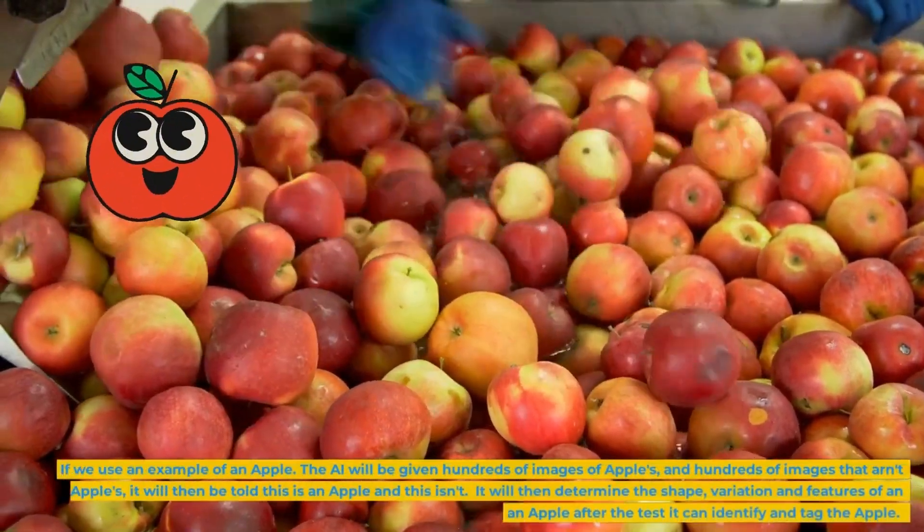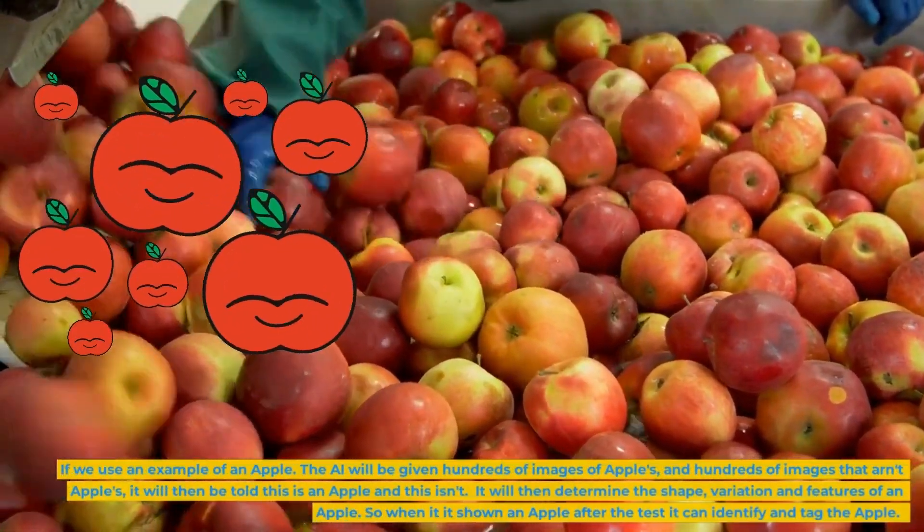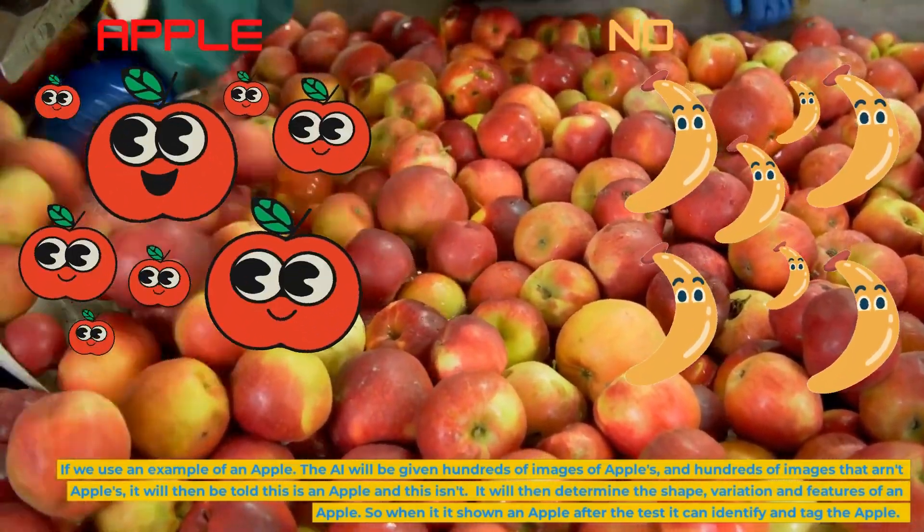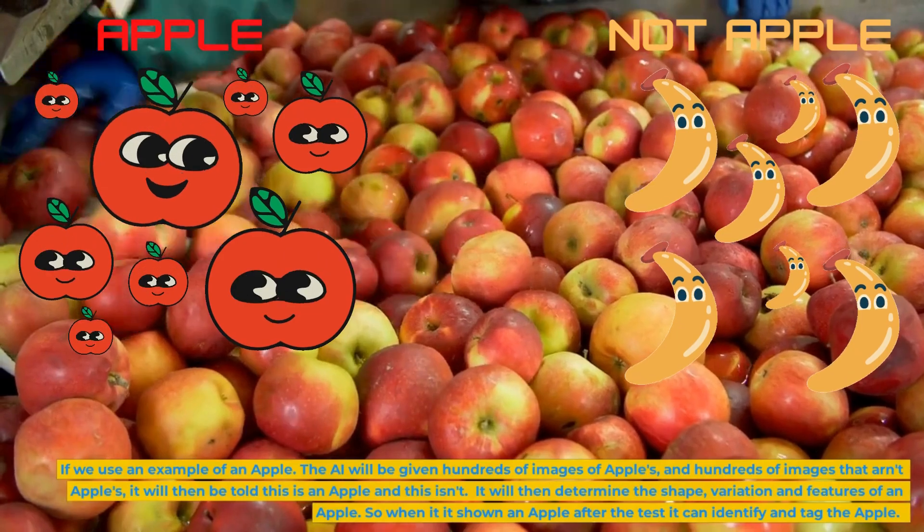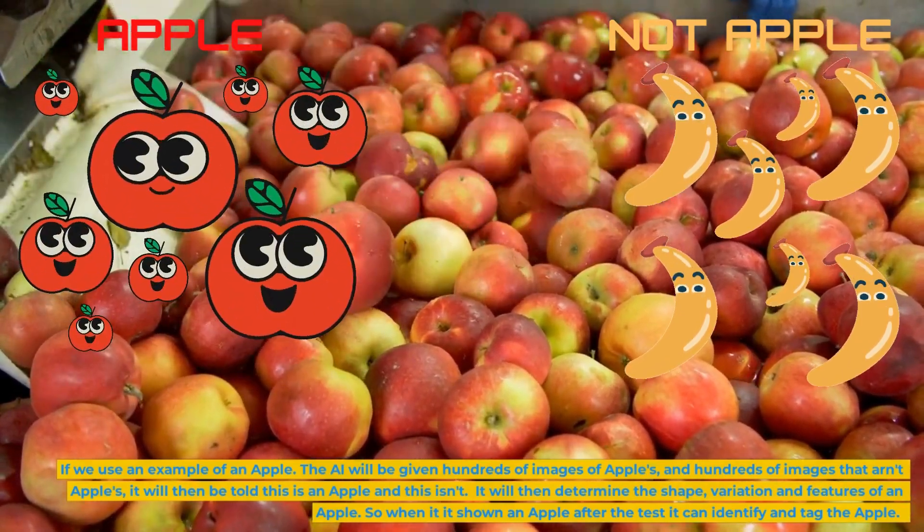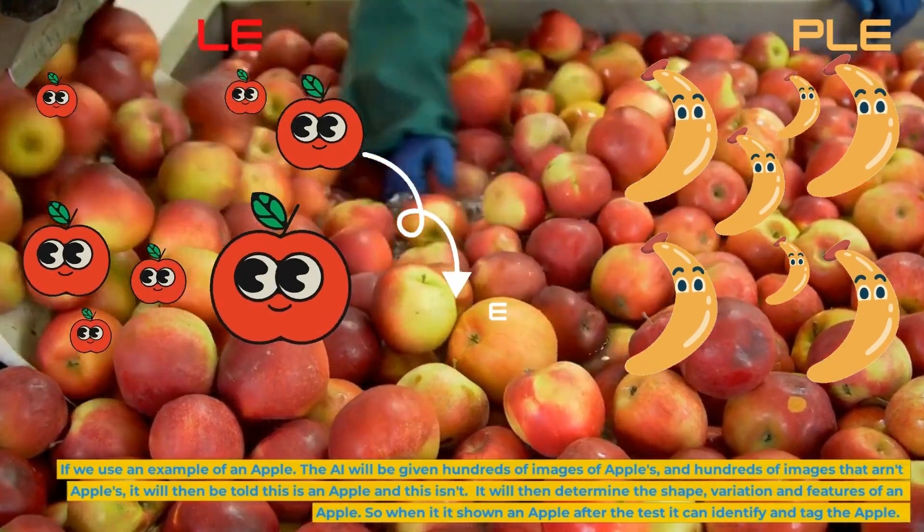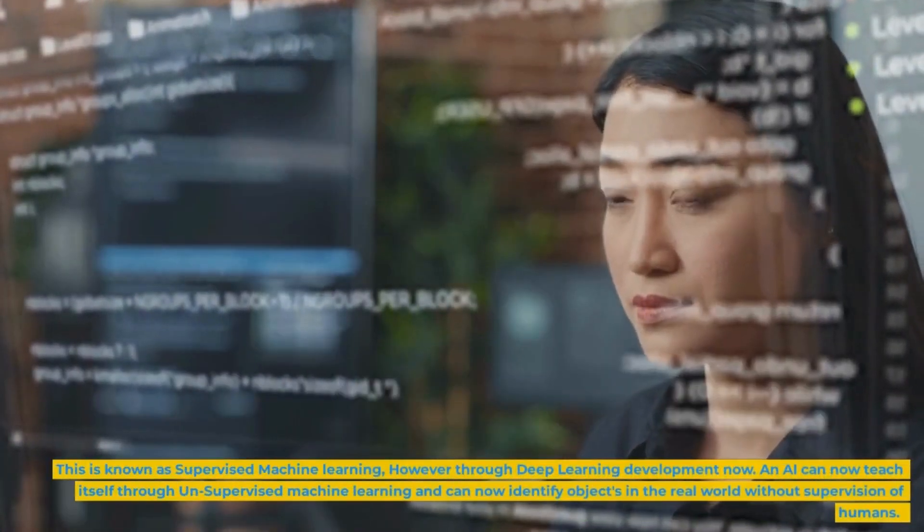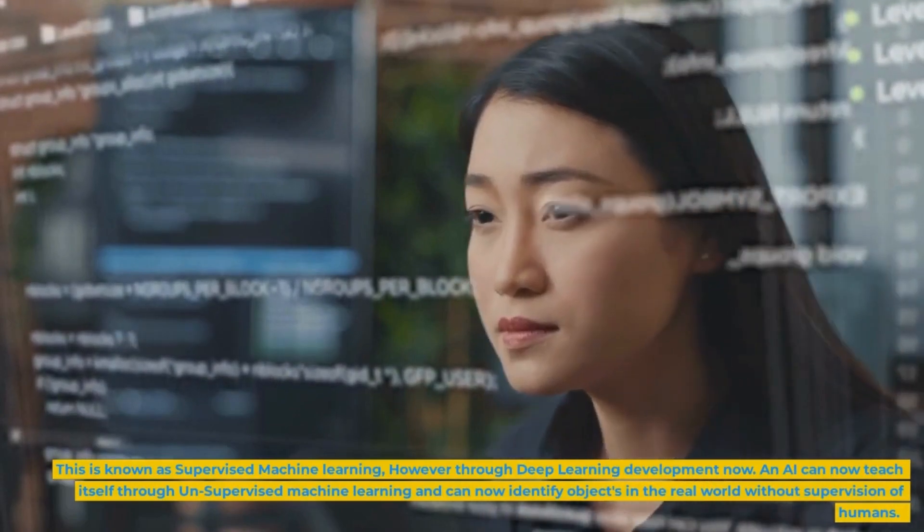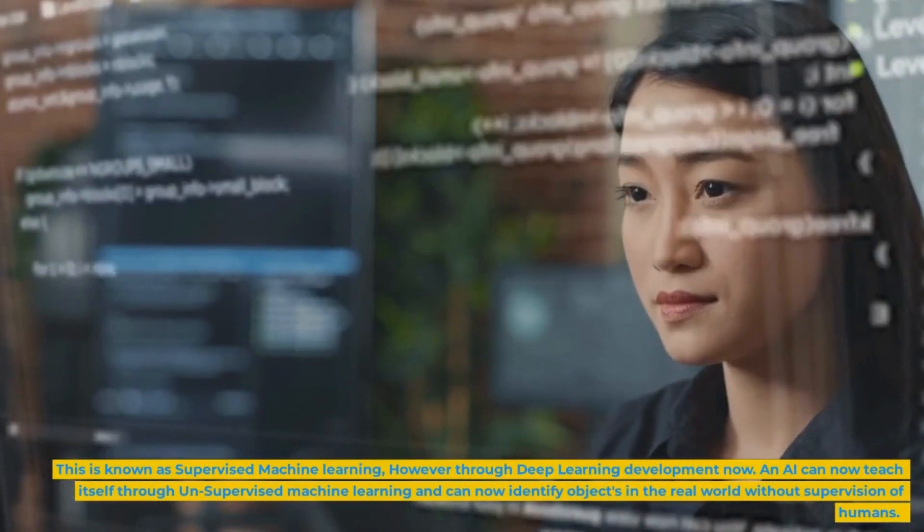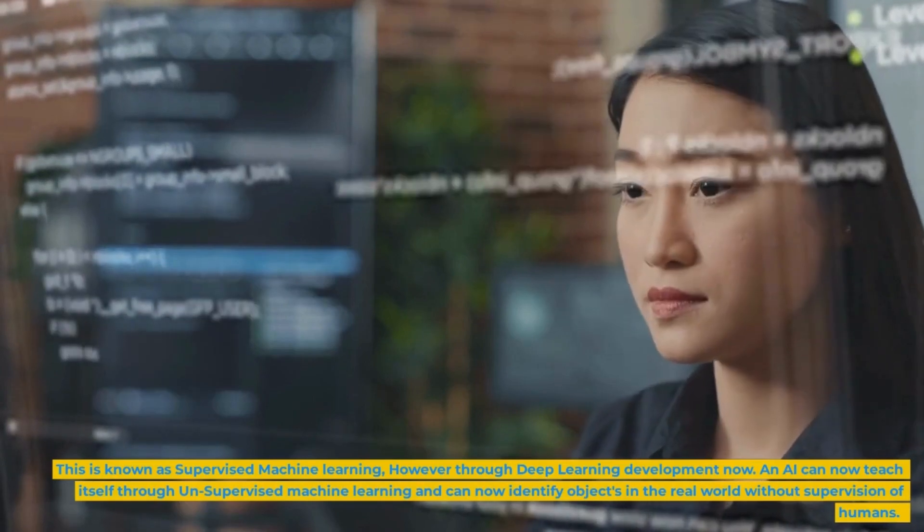If we use an example of an apple, the AI will be given hundreds of images of apples and hundreds of images that aren't apples. It will then be told this is an apple and this isn't. It will then determine the shape, variation and features of an apple, so when it is shown an apple after the test it can identify and tag the apple. This is known as supervised machine learning. However, through deep learning development now, an AI can now teach itself through unsupervised machine learning and can now identify objects in the real world without supervision of humans.